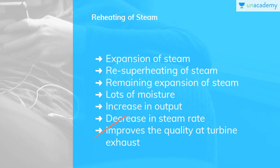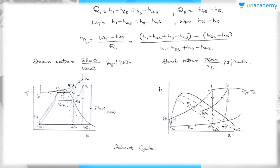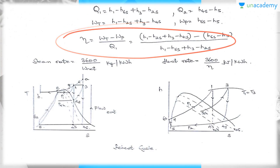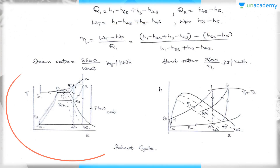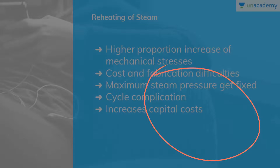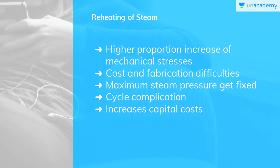The cost and fabrication difficulties will also increase. You can see here the efficiency formula used for reheating of steam. You can see the reheat cycle T-S diagram showing the different states 1 to 4s to 5 to 6s, and also in the H-S diagram. Reheating of steam actually increases mechanical stresses in a higher proportion, and the usage of 2 or more reheats results in cycle complication which increases the capital cost, not justified by the improvement in cycle efficiency.